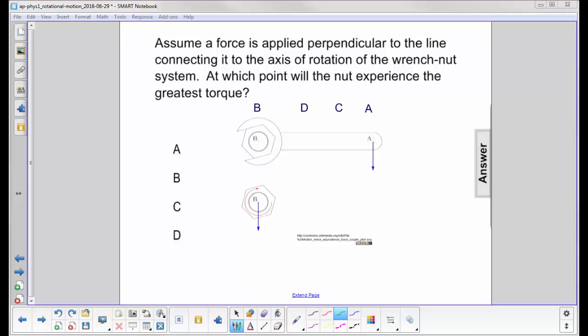Assume a force is applied perpendicular to the line connecting it to the axis of rotation of the wrench-nut system. Here's the axis of rotation here right in the middle, actually marked by this letter B here. Here's the force perpendicular to the line that connects it to the axis of rotation.